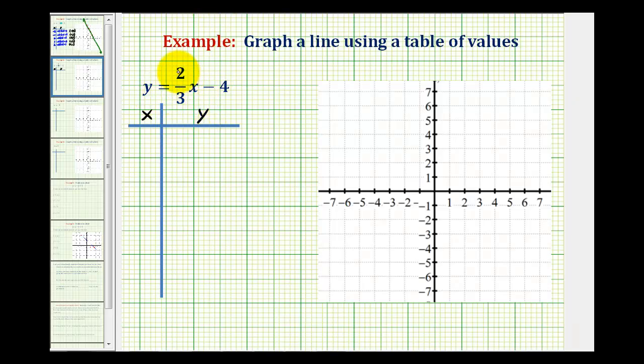Notice in our equation we have a fraction. We have y equals 2/3 times x minus 4. Since it is easier to plot points on the coordinate plane that don't contain fractions, we want to select an x value here so this product would not contain a fraction. If we select x values that are multiples of the denominator, this product would not contain fractions. In this case, we want to select x values that are multiples of 3.